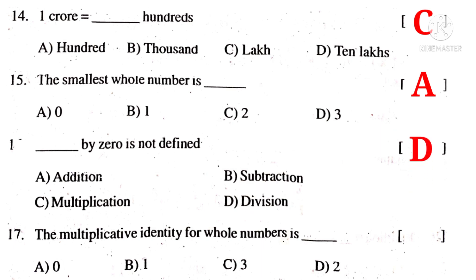The multiplicative identity for whole numbers is any number multiplied by 1 does not change its identity. So the correct choice is B.